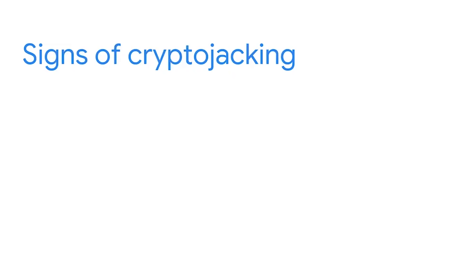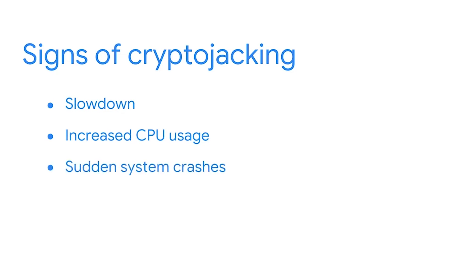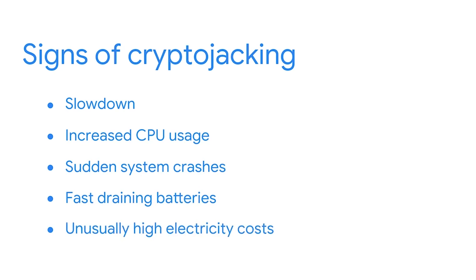Despite their usefulness, detection systems have a major drawback — new forms of malware can remain undetected. Fortunately, there are subtle signs that indicate a device is infected with cryptojacking software or other forms of malware. By far the most telling sign of a cryptojacking infection is slowdown. Other signs include increased CPU usage, sudden system crashes, fast-draining batteries, and unusually high electricity costs related to the resource-intensive process of crypto mining.